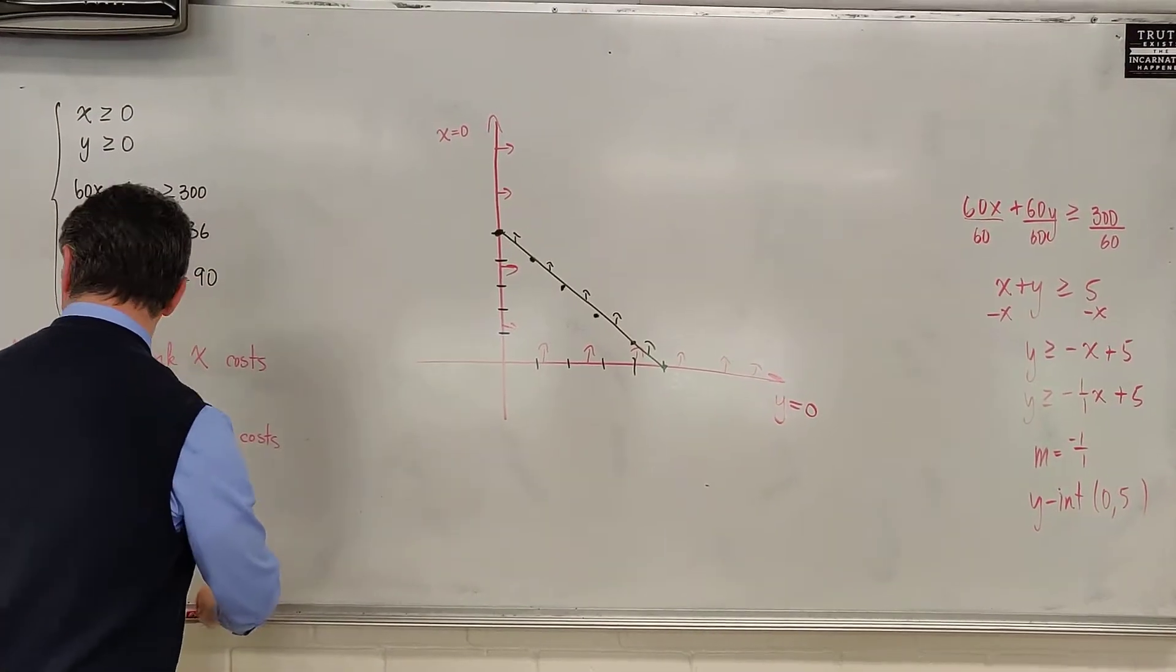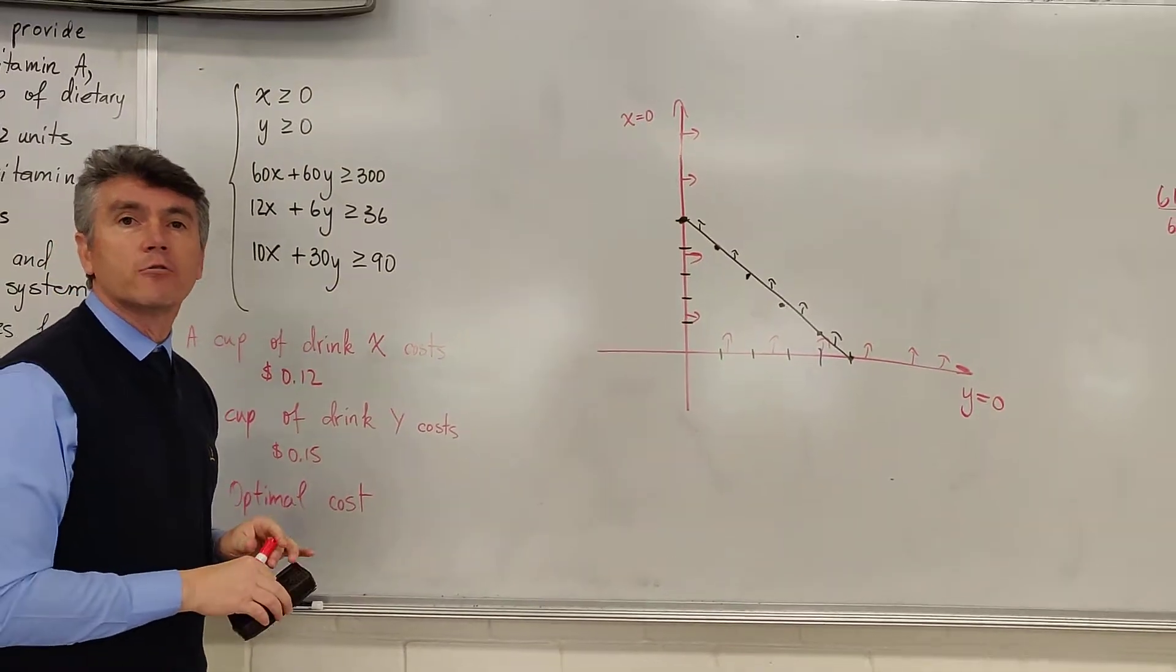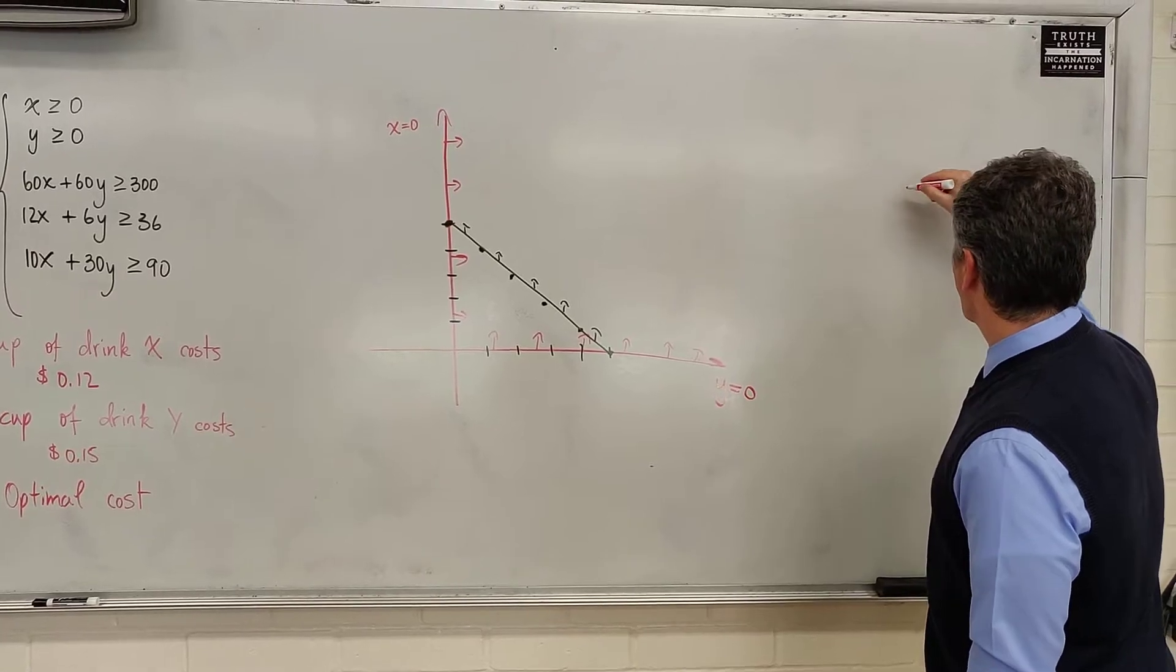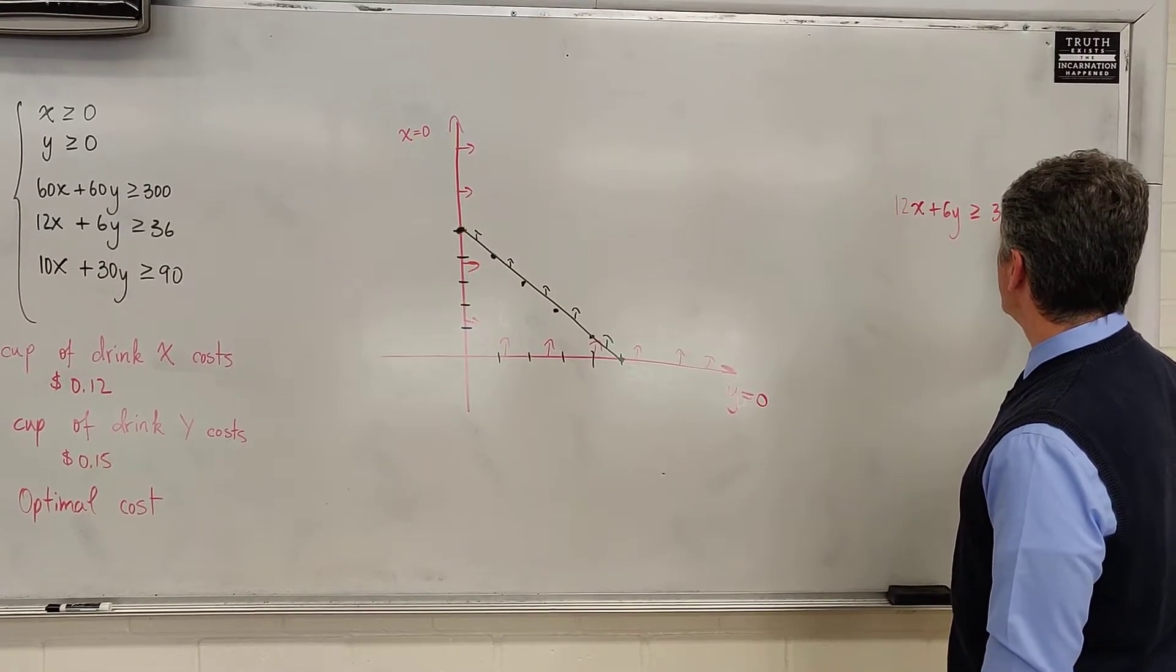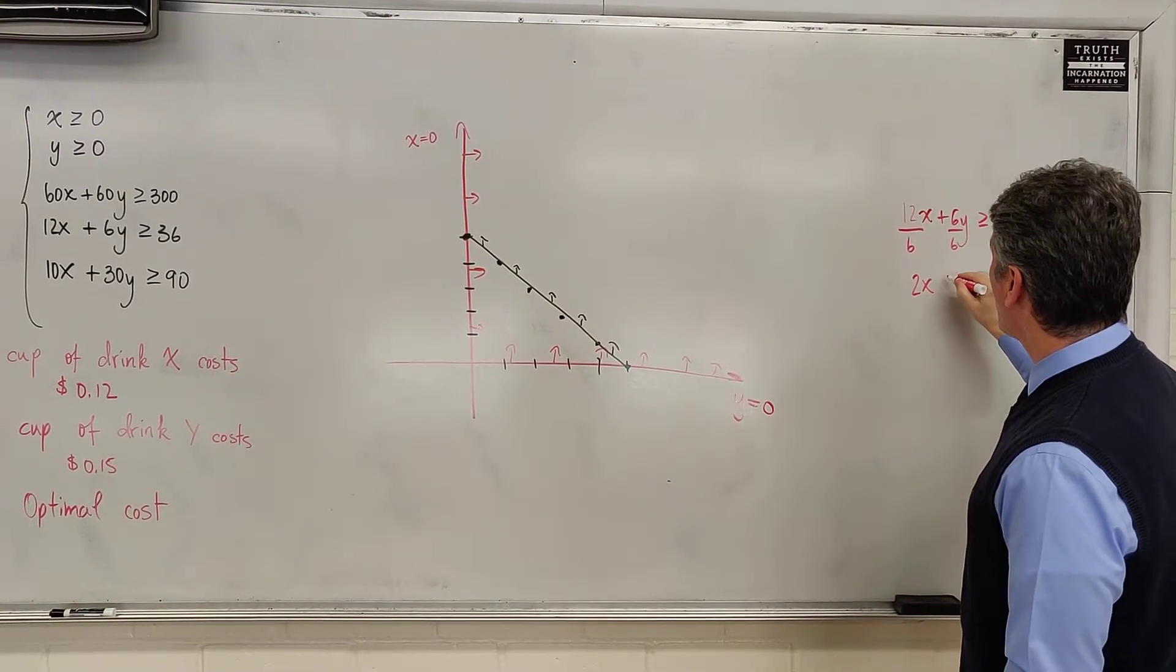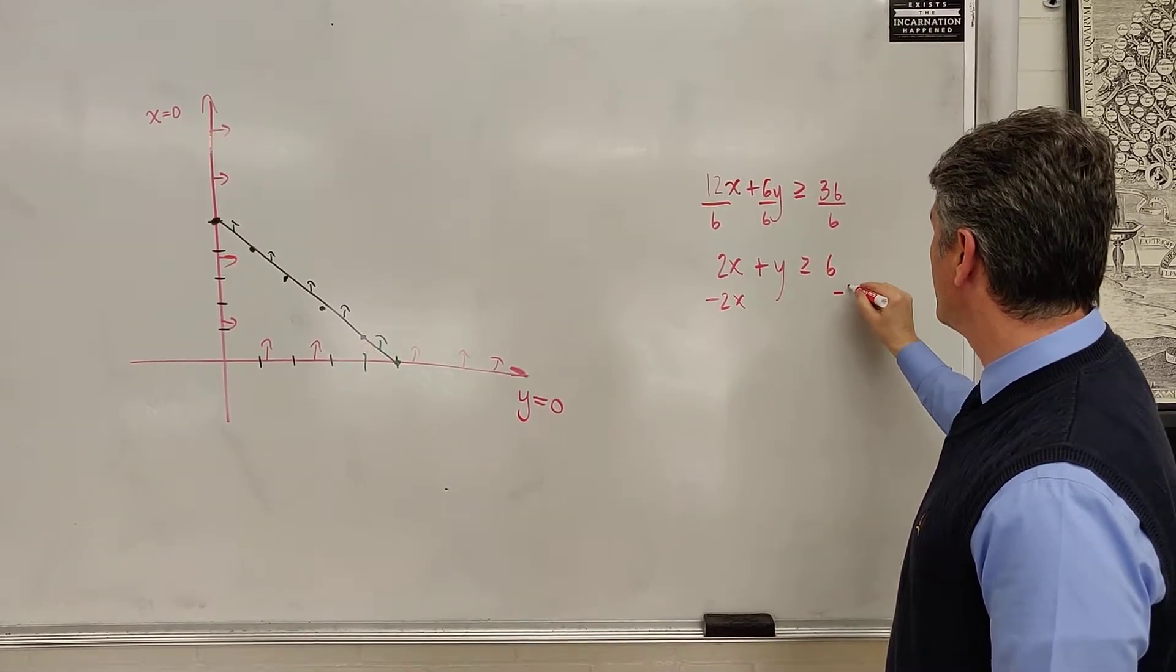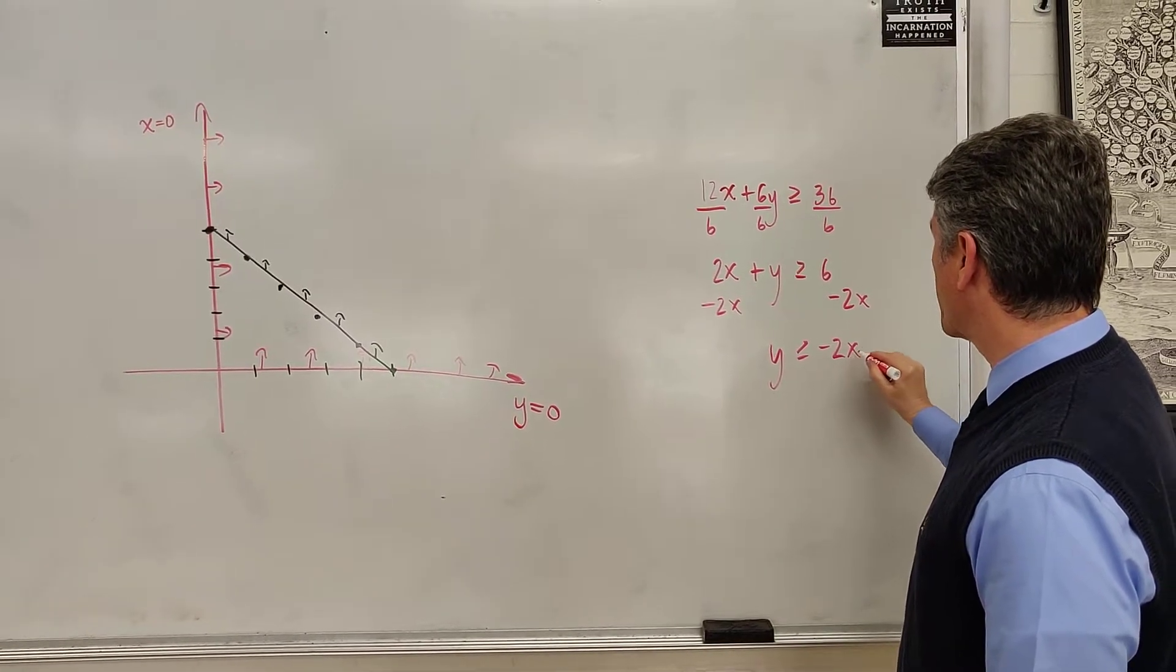Let's move on to our second inequality. Actually, it's the fourth one. 12x plus 6y is greater than or equal to 36. Let's notice that all the numbers are divisible by 6. I'm going to divide everything by 6. It's easier to work with smaller numbers than it is to work with bigger numbers. And we have 2x plus y is greater than or equal to 6. Subtract 2x. And we have y is greater than or equal to negative 2x plus 6.